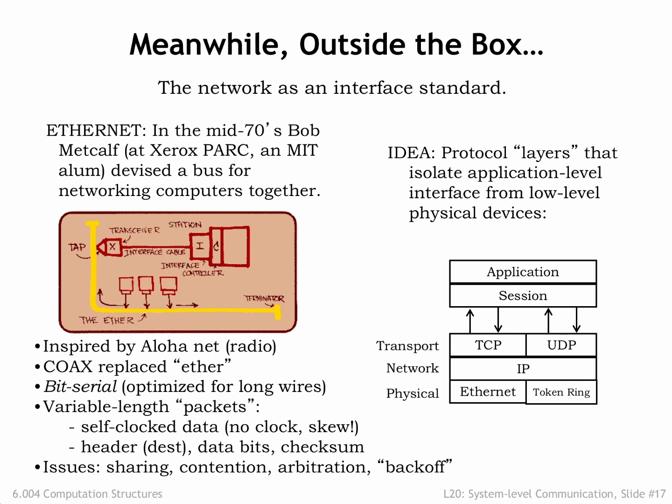There are different physical layer modules available for the different types of physical networks. The network layer deals with the addressing and routing of packets. Clever routing algorithms find the shortest communication path through the multi-hop network and deal with momentary or long-term outages on particular network links.